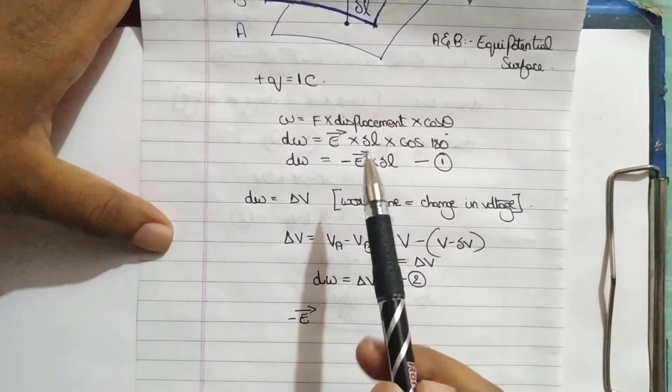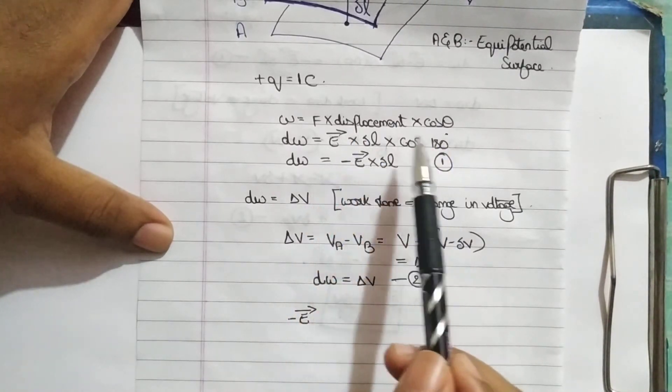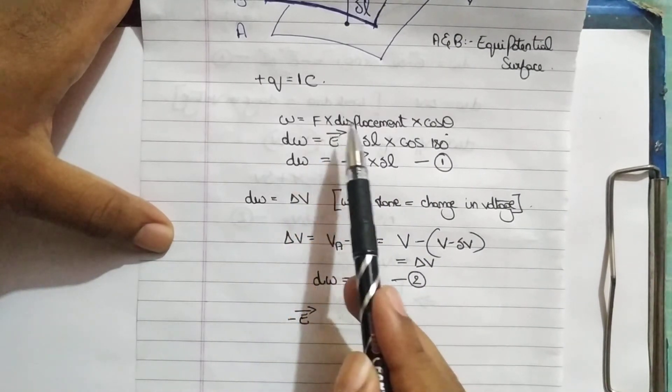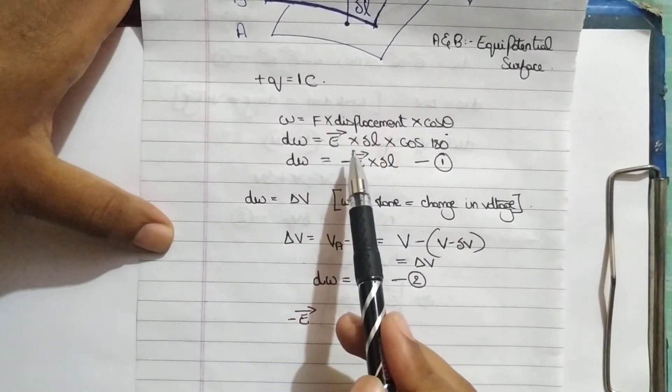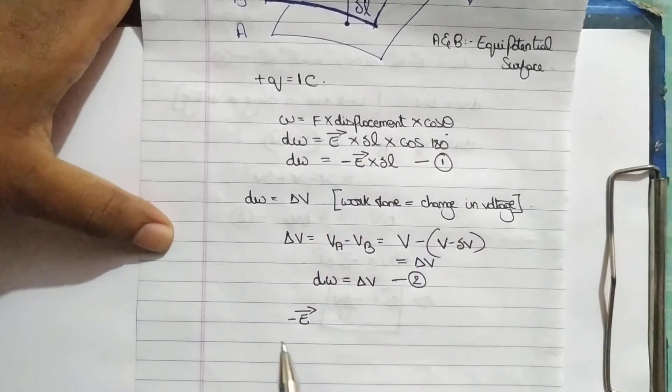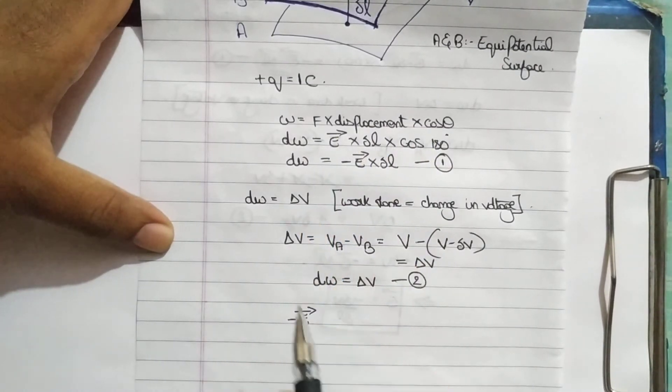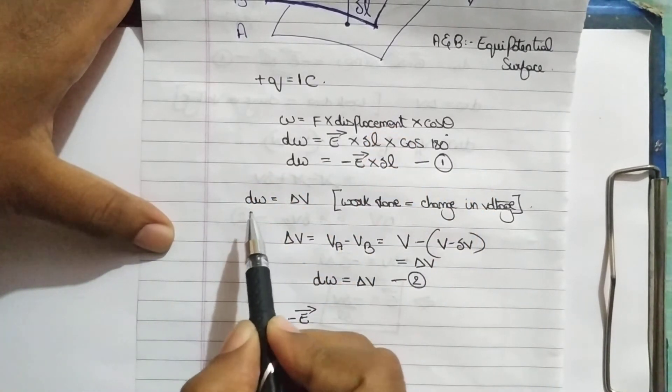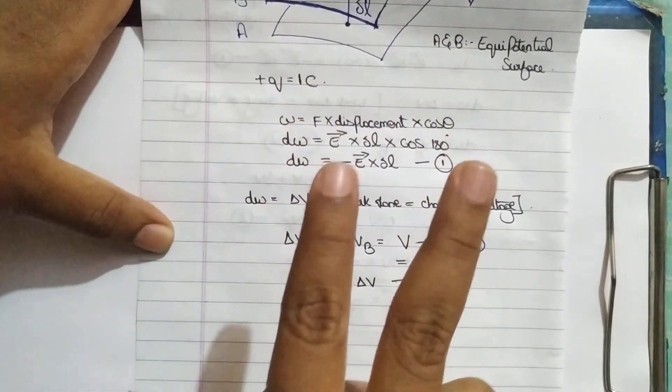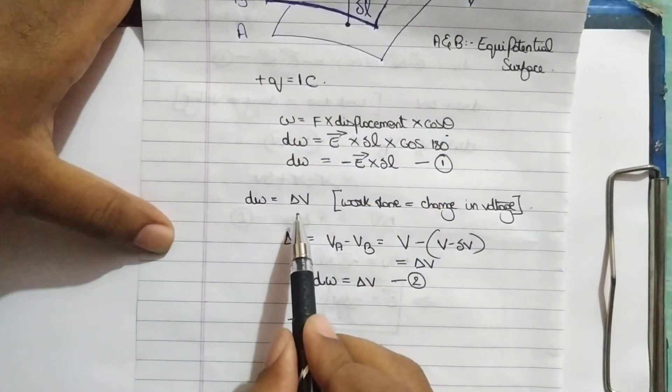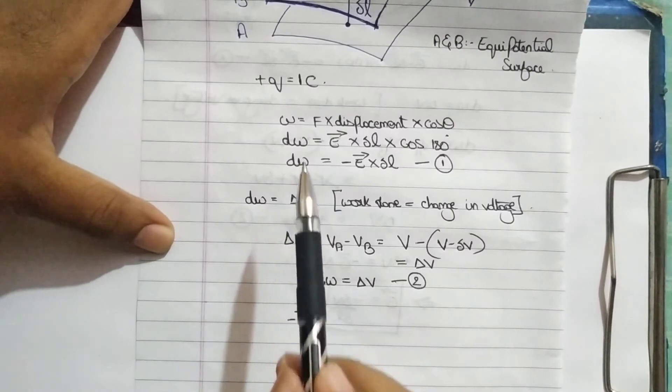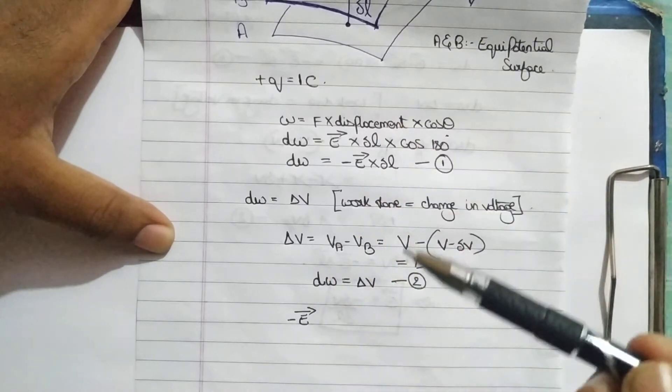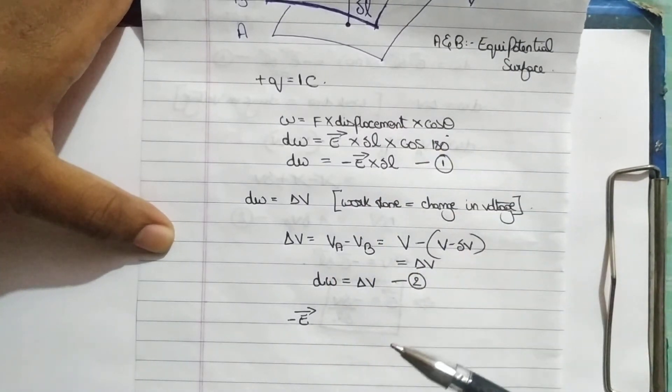All you need to do is you need not to remember and mug up this equation. You just need to remember force into displacement gives us E into delta L, and cos theta is the element along with this derivation. What you need to remember in this equation is you need to consider two equations for work. Equation of work with respect to change in potential, equation of work with respect to force into displacement. This is the classical or normal physics, and this is from the electrostatic potential what you have learnt.